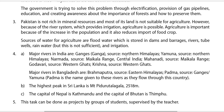In the northern Himalayas — Narmada, source: Vindhya Range, central India; Mahanadi, source: Makala Range; Godavari, source: Western Ghats; Krishna, source: Western Ghats. Major rivers in Bangladesh are: Brahmaputra, source: eastern Himalayas; Padma, source: Ganges. Padma is the name given to these rivers as they flow through this country. This is the answer of part A of question number four.